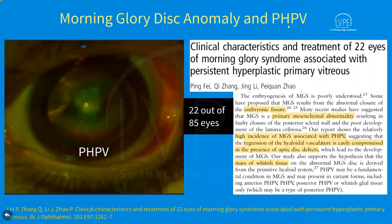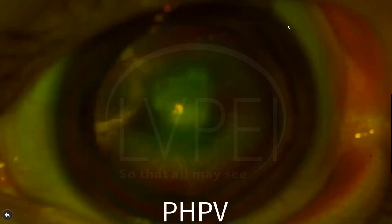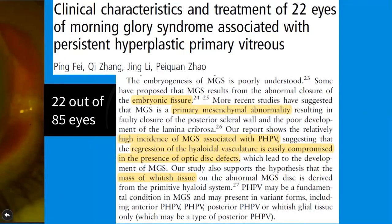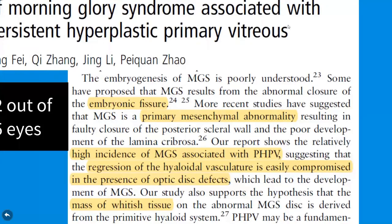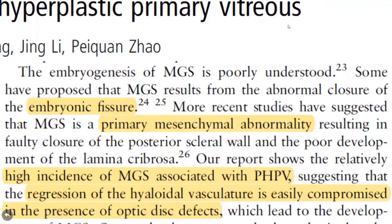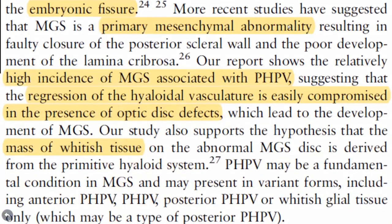Morning glory disc has been shown to be associated with persistent fetal vasculature. One study by Ping et al. reported the presence of PHPV in 22 out of 85 eyes. This suggests that regression of hyaloid vasculature is easily compromised with optic disc defects, and the whitish tissue is derived from the primitive hyaloid system.